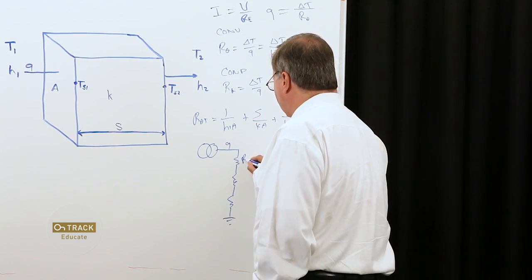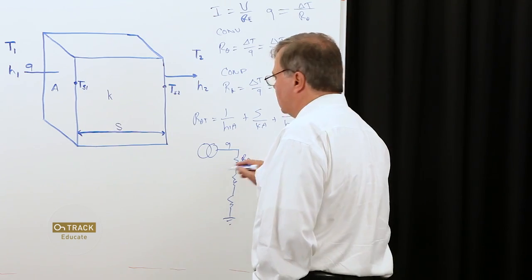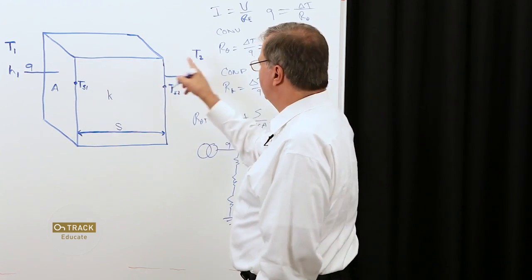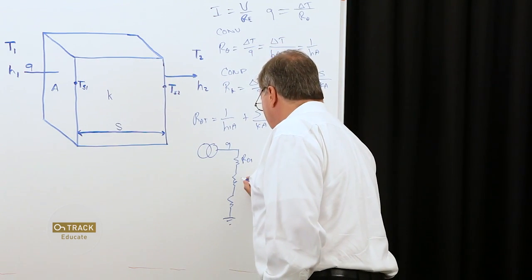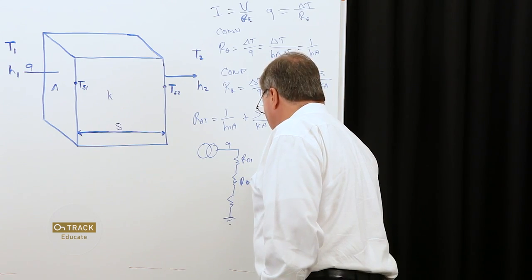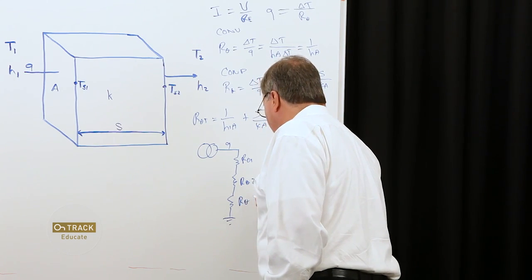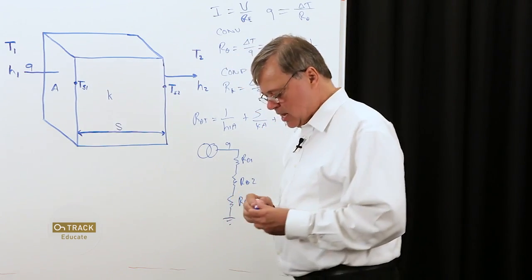So, we've got R theta, I'll call this region 1, 2, and 3. R theta 2, R theta 3.